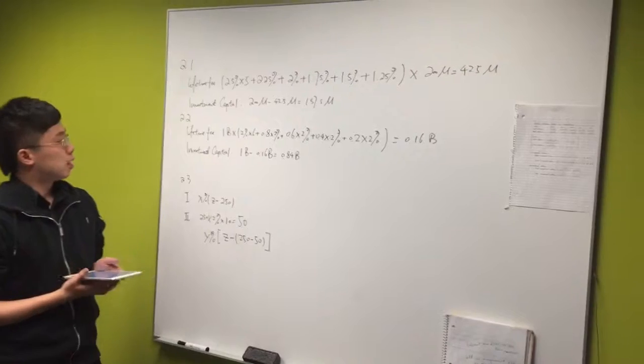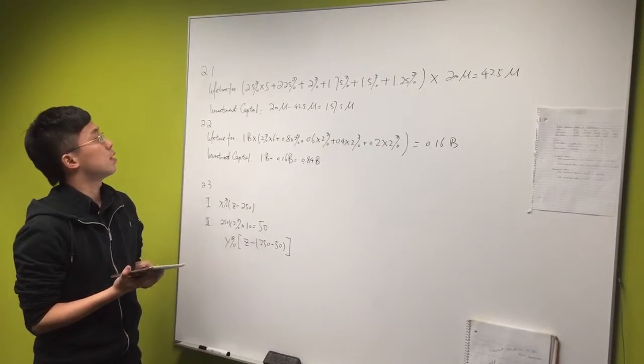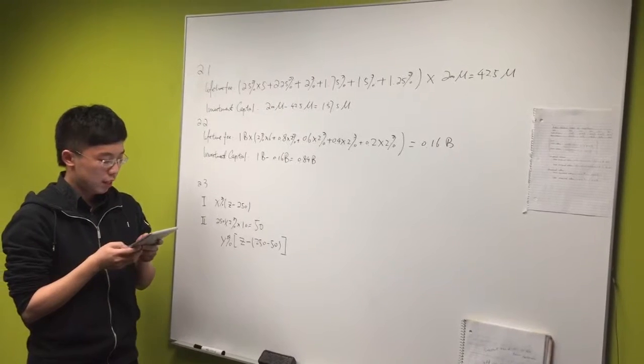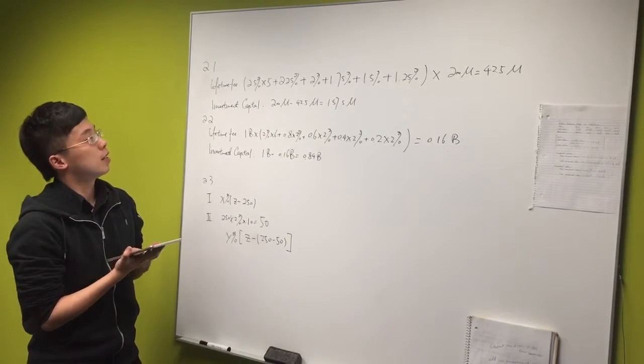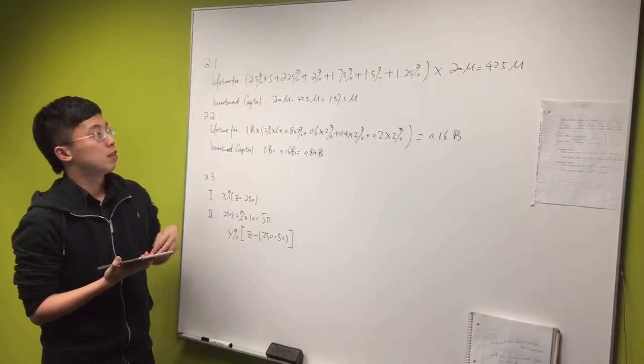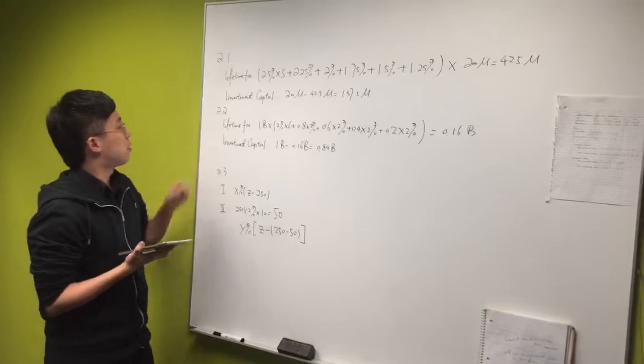Question 2.1. The management fee for the first five years is 2.5 percent. Then it reduced 0.25 percent in the following years. So here is the calculation and the result.